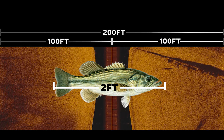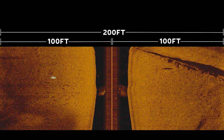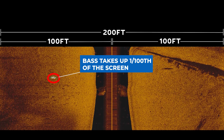Bass are not that big — even a really big bass might be no more than 24 inches long or two feet. Therefore, if you're scanning to the right and left of your boat 100 feet on each side, that means the bass is only going to take up one one-hundredth of the width of that screen. It's going to be very difficult to identify a tiny fish on your screen compared to the vast amount of water you're scanning on your side imaging.